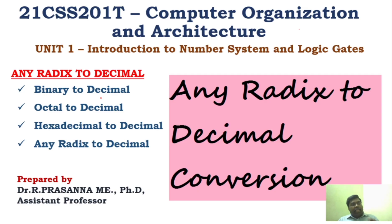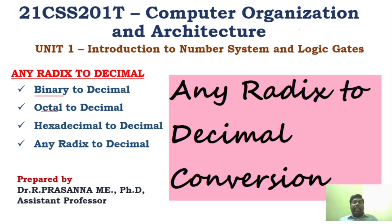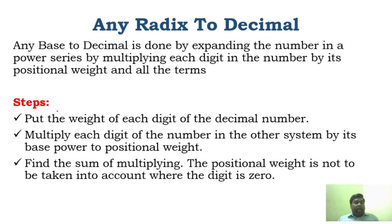We are going to see how to convert binary to decimal, octal to decimal, hexadecimal to decimal, and any radix to decimal. So any base system we are going to convert to a decimal conversion. First we will start with the basics — the rules and regulations to convert any radix to a decimal.